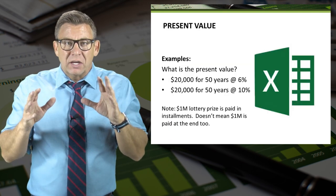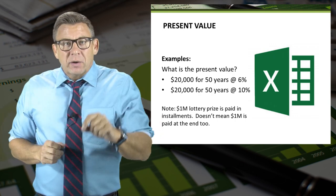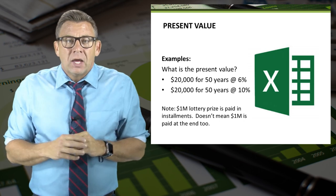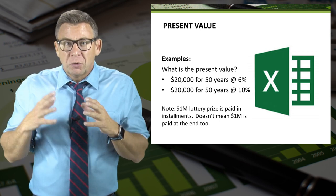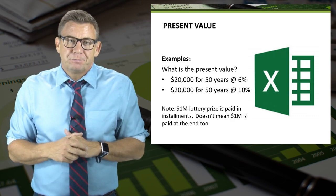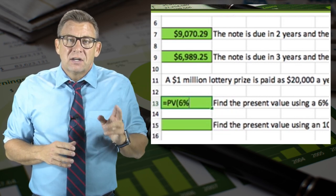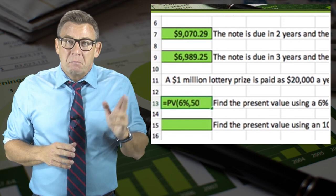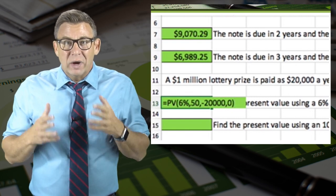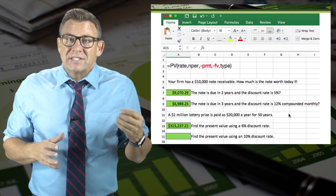So let's look at two more scenarios where we'll have a regular payment. Assume that you are a $1,000,000 lottery winner. The lottery will pay you $20,000 per year for 50 years — that's how it totals a million dollars. Let's figure out the present value, meaning how much real purchasing power you'll have, assuming a 6% discount rate and a 10% discount rate. I enter equals PV, open parentheses, 6%, comma, 50, comma, minus $20,000, comma, and 0 for future value since there was no initial one-time amount. This results in a present value of $315,237.21.